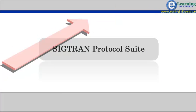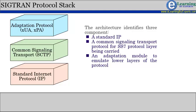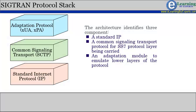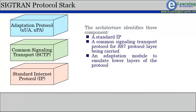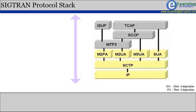Now we will discuss the SIGTRAN protocol suite and its usage. The SIGTRAN protocol stack comprises three components: the standard internet protocol IP, a common signaling transport protocol SCTP, and an adaptation module to emulate lower layers of the SS7 protocol and encapsulate the signaling of upper layer users in SCTP. The various adaptation layers are M2UA and M2PA to emulate MTP2 functionality, M3UA for emulating MTP3 functionality, and SUA for emulating the SCCP layer functionality. Here, PA stands for peer adaptation and UA stands for user adaptation.